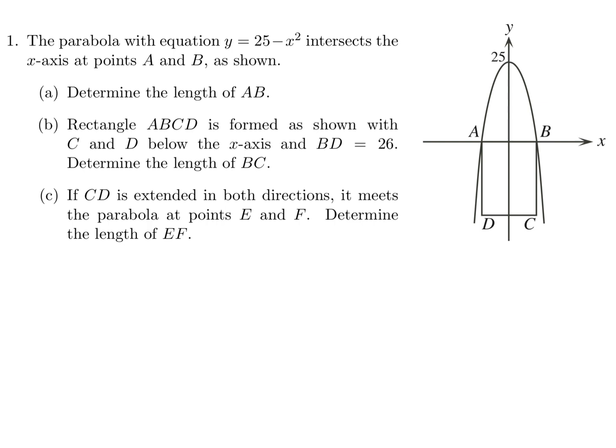The parabola with equation y equals 25 minus x squared intersects the x-axis at points A and B, as shown. Determine the length of AB. As long as we find the x-intercepts, we should be good to go. To find the x-intercept, you set y equal to 0: 25 minus x squared.